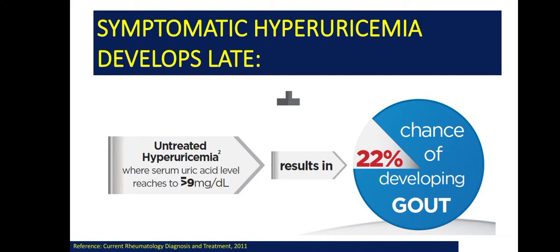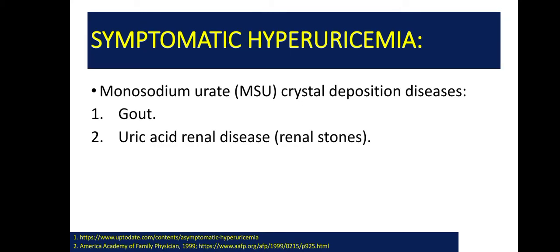Now, symptomatic hyperuricemia develops late. If hyperuricemia is untreated, it can lead to gout in 22% of cases — there is a 22% chance of developing gout. Symptomatic hyperuricemia with monosodium urate crystal deposition can lead to gout formation. It can also lead to uric acid renal disease like renal stones.